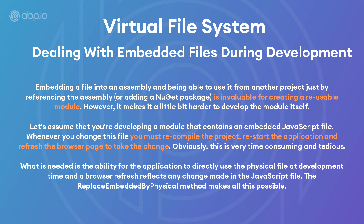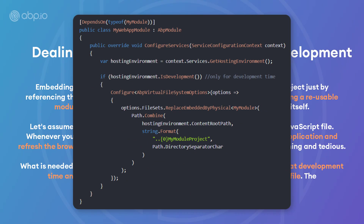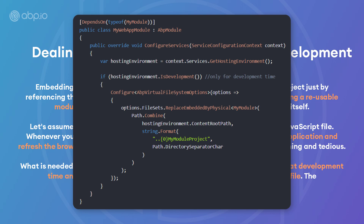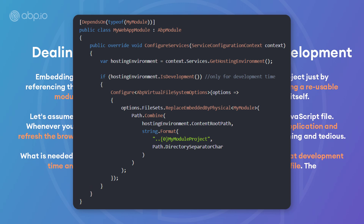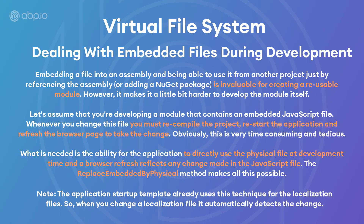The solution is the ability for the application to directly use the physical file at development time, so a browser refresh reflects any change made in the JavaScript file. The ReplaceEmbeddedByPhysical method makes all of this possible. This example shows an application that depends on a module named MyModule which contains embedded files, and the application can access the source code of the module at development time. A side note: the application startup template already uses this technique for the localization files, so if you change a localization file, it automatically detects the change.